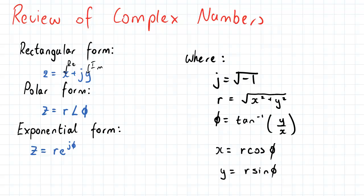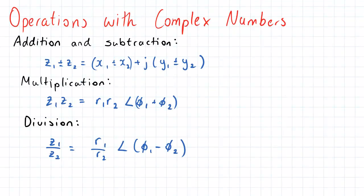So, in terms of operations with complex numbers, for the addition and subtraction, it is actually preferable for the complex number to be expressed in rectangular form. So, in this case, where z1 is going to equal x1 plus jy1.